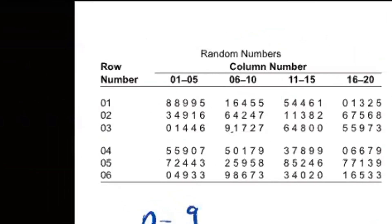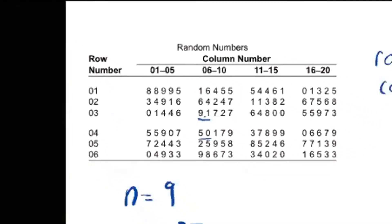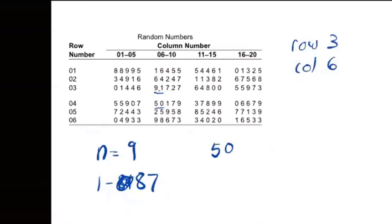Row three, column six was that nine, and next to it is a one. So that is faculty member 91, except it's bigger than 87, so I'm going to ignore that one. Now we move down the column to the next row. The next two digits I see are five zero. So faculty member 50 is the first person I'm going to include.